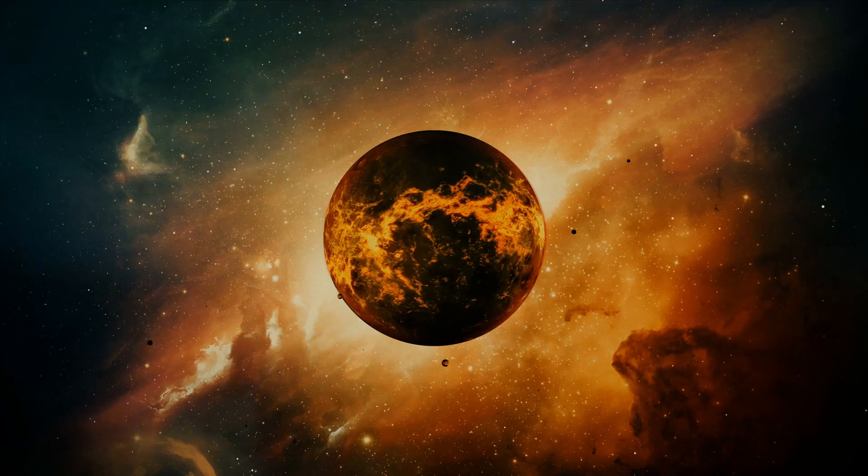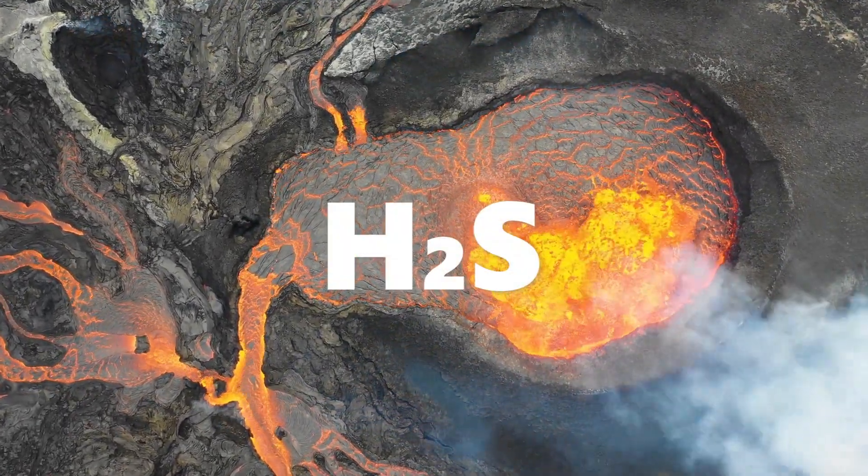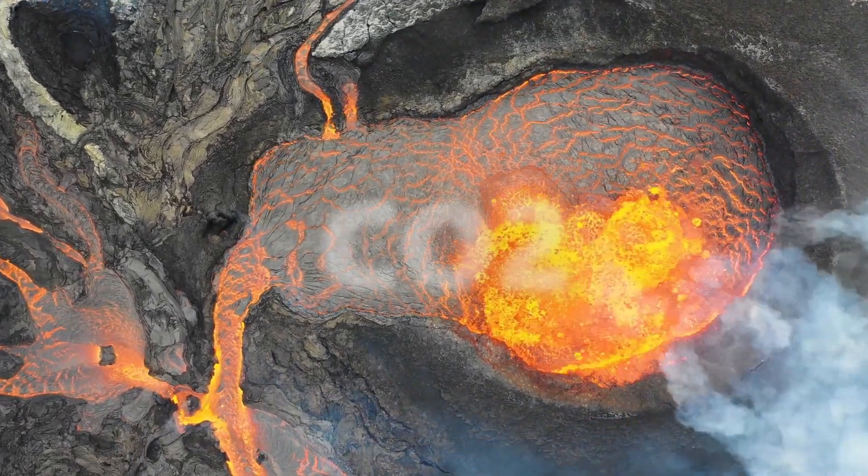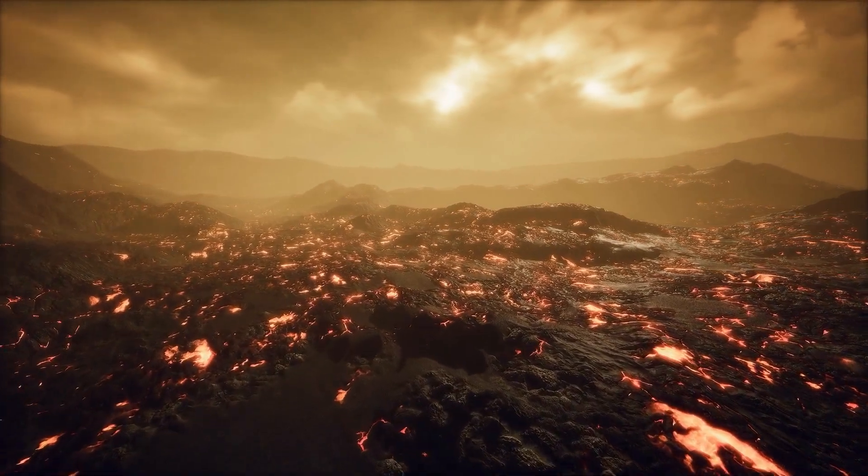Volcanically, this young Earth was highly active. It emitted gases like hydrogen sulfide, methane, and carbon dioxide. These gases formed the very first atmosphere on our planet.